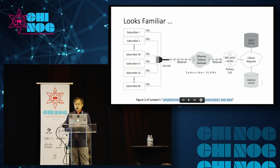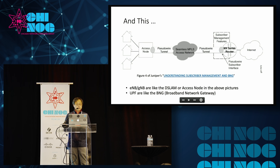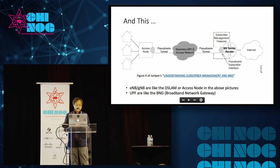This architecture is actually familiar to those who know broadband networks. In a broadband picture, we have access nodes connected through a network toward BNGs — here shown as MX routers — sometimes through pseudowire tunnels. The eNodeB and gNodeB we talked about are basically like the DSL modems or access nodes in that picture, and the UPFs are like the BNGs, broadband network gateways.